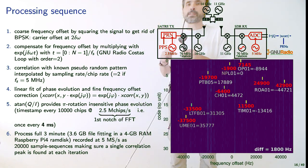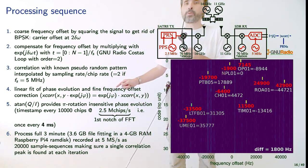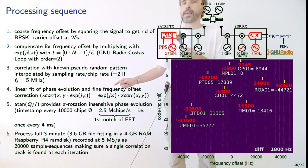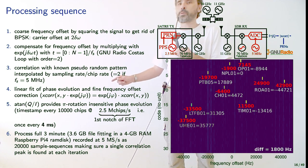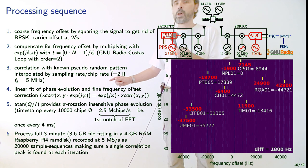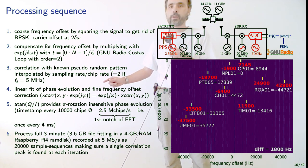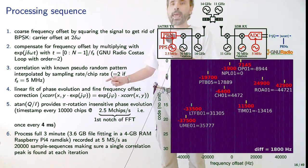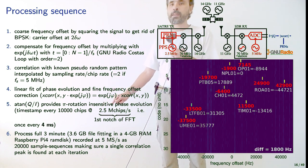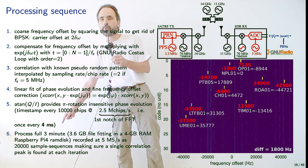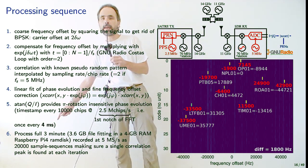Once frequency offset is compensated, we interpolate the code to the right sampling frequency. The chip rate is identified from the BPSK spectrum — the first notch is at the chip rate, which is 2.5 MHz. Since we record at 5 MHz sampling rate, we interpolate by a factor of 2 by duplicating each bit. With 10,000-bit sequences at 2.5 MHz per second, we expect a correlation peak every 4 ms.